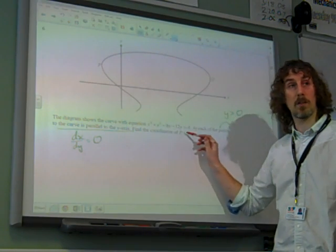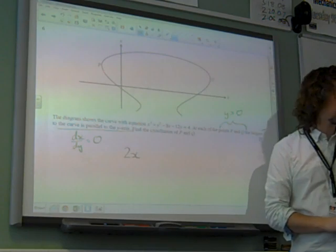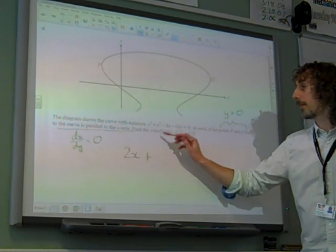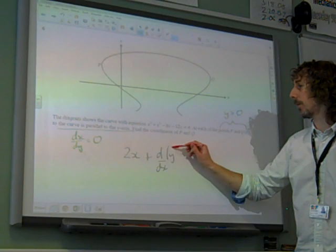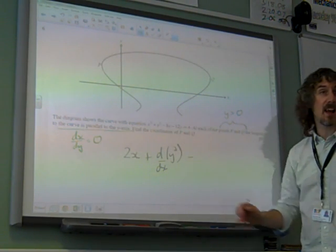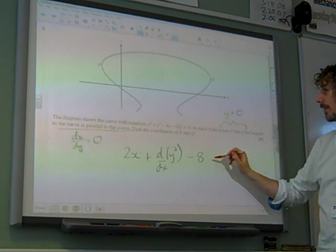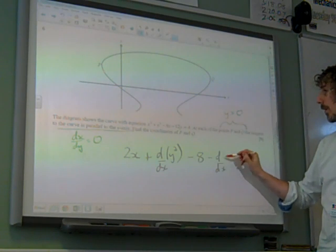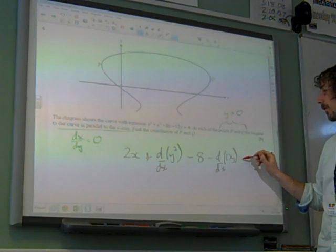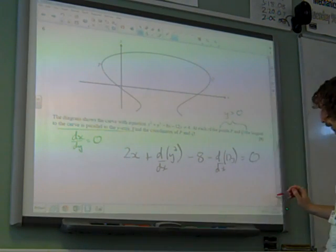So if we differentiate with respect to x, we get 2x from the x squared. Differentiate y cubed, well, I'm going to do this in two lines, just so that you can see what we're doing, with respect to x. Differentiate minus 8x with respect to x, we get minus 8. And we're going to differentiate 12y with respect to x, and 4, of course, goes to 0. So that's where we started from.